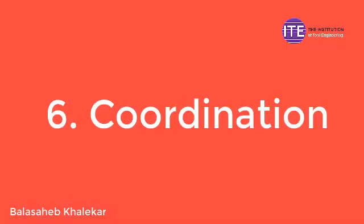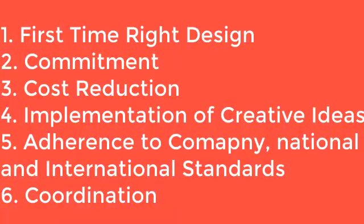The sixth performance measure of a design engineer is coordination. In a company there is teamwork, and how good you are as a team player is important. In an R&D project, along with the design engineer there is a process engineer, production engineer, quality engineer, purchase engineer, service engineer, and marketing engineer — this is called a CFT, cross-functional team. All these members contribute, and you should accept good suggestions from them. A design engineer should work on these six major parameters to achieve faster growth.